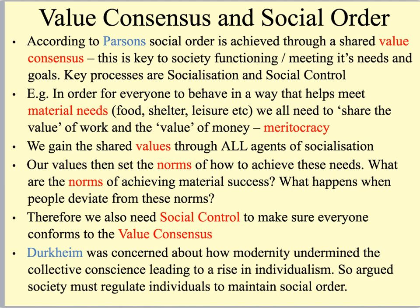It's worth noting that Durkheim, who obviously wrote prior to Parsons, was quite concerned about how modernity — for him, the industrial revolution, the rise of science, mass economic and factory-style production — was starting to undermine the collective conscience, or value consensus. He started to see a rise of individualism, with the individual becoming perhaps more important than the community. He said society must regulate individuals to maintain social order, otherwise people are going to go off in completely opposite directions. But he argued society is powerful enough, through our agents of social control, to keep everybody striving for similar needs and goals.